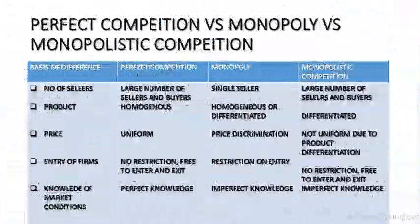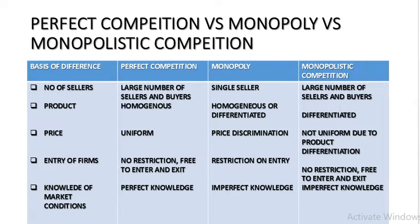Now we are going to compare perfect competition, monopoly and monopolistic competition together. First, on the basis of number of sellers: in perfect competition, large number of sellers and buyers; monopoly has a single seller; monopolistic competition has large number of sellers and buyers. On the basis of product: perfect competition — homogeneous; monopoly — may be homogeneous or differentiated, the decision lies with the monopolist; monopolistic competition — product is differentiated, close substitutes.